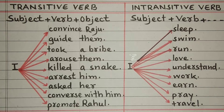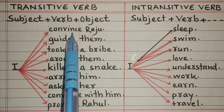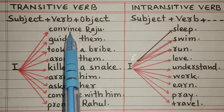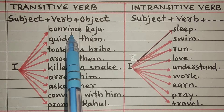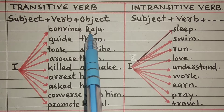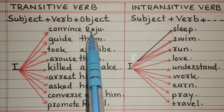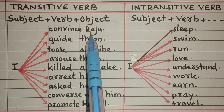Transitive verb ke liye sentence formula hai: Subject plus Verb plus Object. Intransitive verb ke liye: Subject plus Verb. Hum examples ke zariye yeh confusion door karne ki koshish karenge — bahut hi aasan, easiest examples ke zariye samjhane ki koshish ki hai. Mujhe ummid hai ke slow se slow learner bhi isko bahut achhe tarike se samajh sakta hai aur apna confusion hamesha ke liye door kar sakta hai.